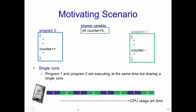Let us explain what synchronization is with this motivating scenario. Let us say we have two programs, program 0 and program 1, and a shared variable defined as counter — a global shared variable: int counter = 5. In program 0 we are incrementing the counter by 1, while in program 1 we are decrementing the counter by 1.